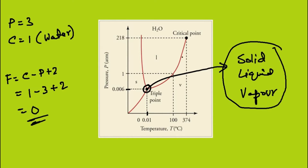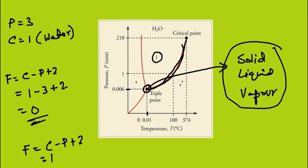Now let us consider any other point other than the triple point — that is, in the liquid-vapor region. If I calculate the degrees of freedom here, it will be C minus P plus 2. The number of components is 1 because we are talking about water, but the number of phases is 2 because liquid and vapor are in equilibrium in this region. So the degrees of freedom comes out to 1.